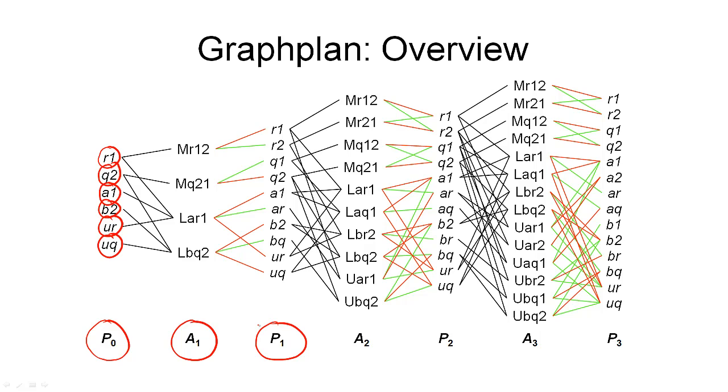The graph expansion step then adds exactly one action layer and one proposition layer to this graph. The first action layer contains all those action symbols, those four here. That would be applicable in a state consisting of all those symbols contained in the preceding proposition layer. So, these actions are applicable in a state that would consist of all these symbols.